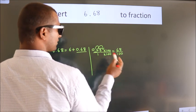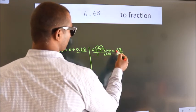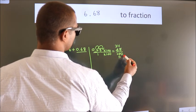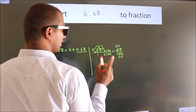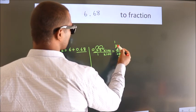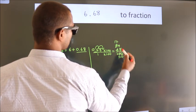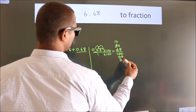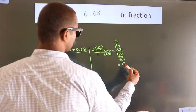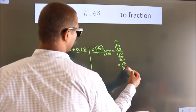I now cancel with 2. 2 3s, 2 4s, 2 5s. This 0 as it is down. I cancel with 2 again. 2 1s, 2 7s, 2 25s. So, the fraction we got is 17 by 25.